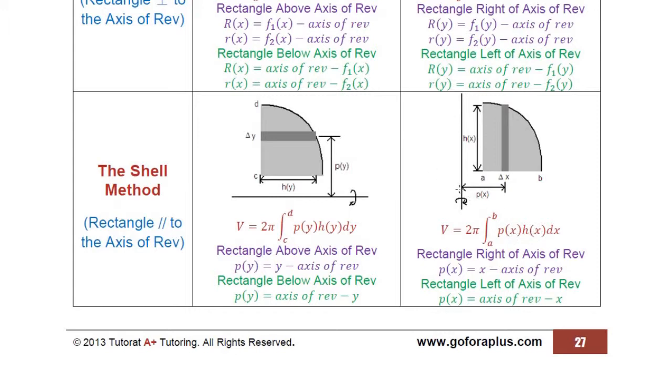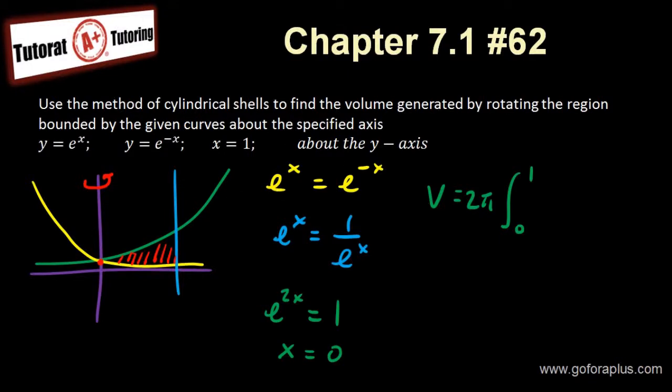p is the distance between the axis to my rectangle. So I will have to subtract the axis of revolution, using that x minus axis of revolution, which is 0 in this case. So I know that my p of x is equal to x minus 0, so that's just x.